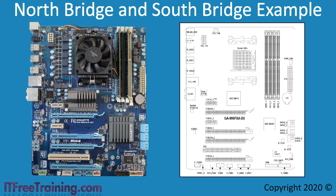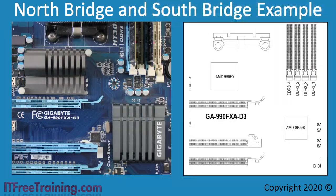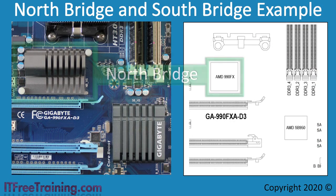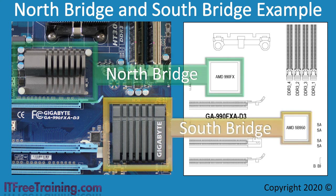In contrast, the South Bridge will generally be found further away from the CPU. Since it does not run as fast as the North Bridge, it does not need to be as close. On this motherboard, it is easy to spot the North and South Bridge due to them both having a rather large heatsink. If you have difficulty finding them, refer to the manual as this will help you locate both chips. The North and South Bridge are referred to as chipsets. Even though there is only one chip, each chip works with other chips to manage the flow of data in a computer.